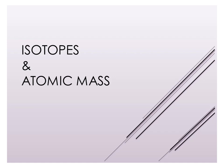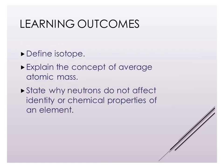In this video we are going to look at the definition of isotopes and how those different isotopes have different atomic masses. After watching this video you should be able to define isotope, explain the concept of average atomic mass, and state why neutrons do not affect the identity or chemical properties of an element.